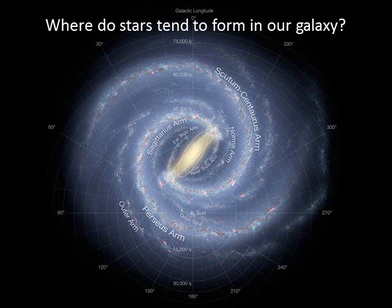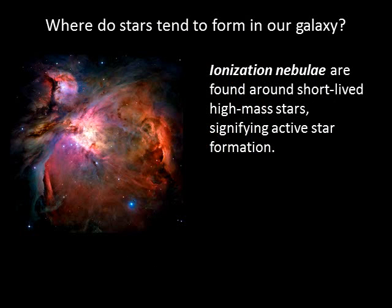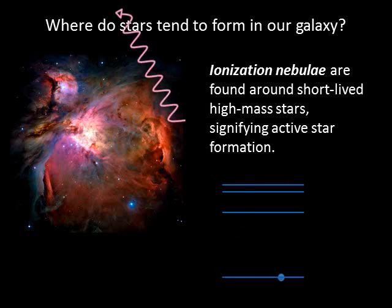The star-gas-star cycle has operated continuously since the Milky Way's birth, yet new stars are not spread evenly across the galaxy. Wherever we see hot, massive stars, we know that we have spotted a region of active star formation. Because these stars live fast and die young, they never get a chance to move very far from their birth places. They therefore signal the presence of star clusters in which lower-mass stars are still forming. Near hot stars, we often find colorful, wispy ionization nebulae. These nebulae glow because ultraviolet photons from the hot stars can ionize the nebula's atoms or raise their electrons to high energy levels, and the atoms emit light as the electrons return to lower energy levels. The Orion Nebula is one of the most famous of these nebulae — at about 1500 light years away, it is one of the closest regions of star formation.